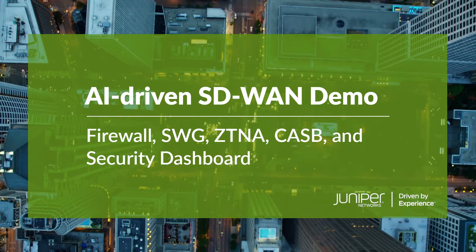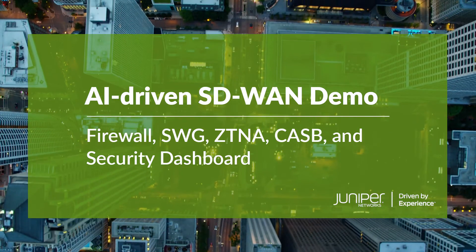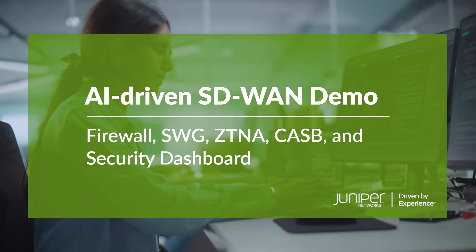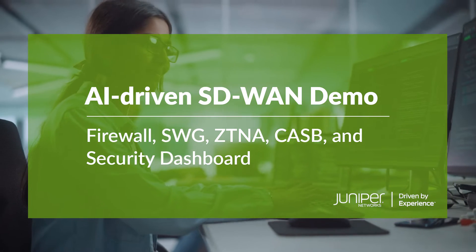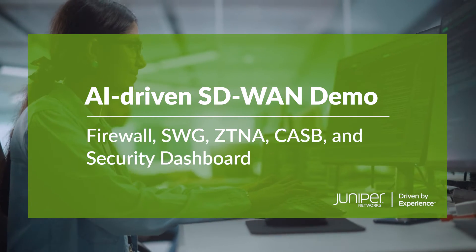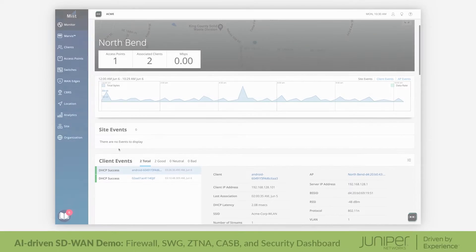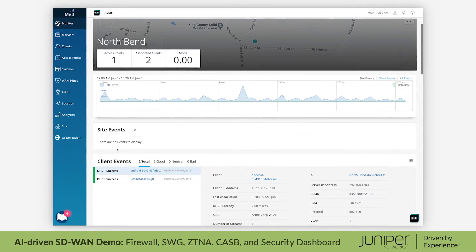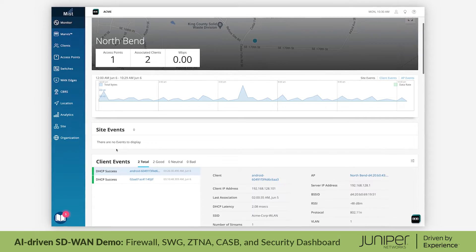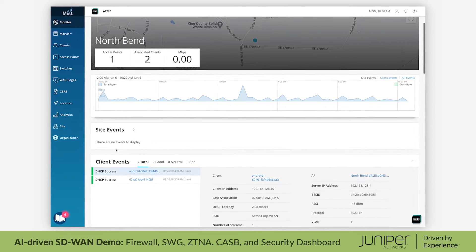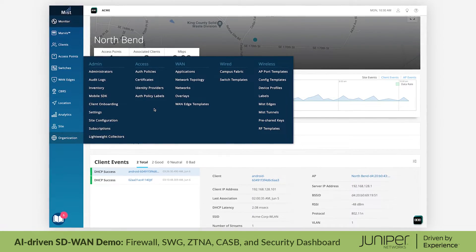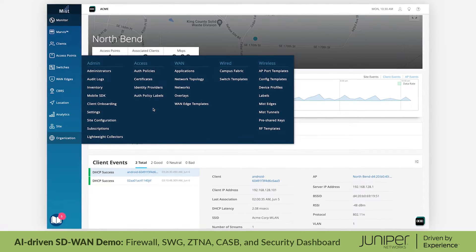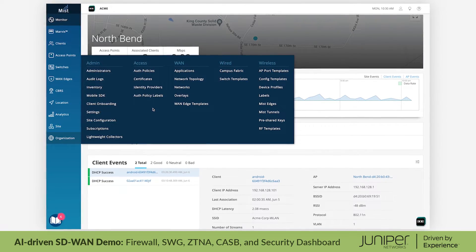This demonstration shows how security functions are designed and implemented throughout the WAN. Security is at the heart of the Juniper SD-WAN solution. The architecture features a thin branch approach which distributes standard L4 network and enhanced L7 security everywhere, while centralizing advanced security to optimize cost and performance.